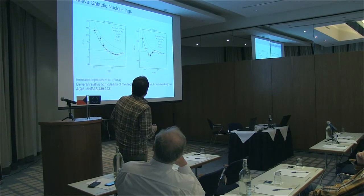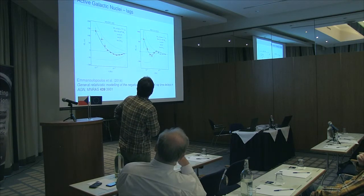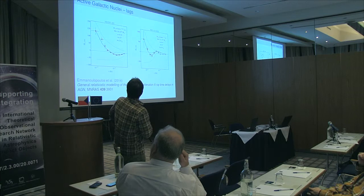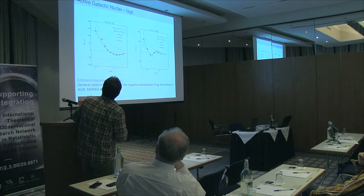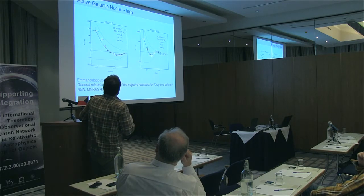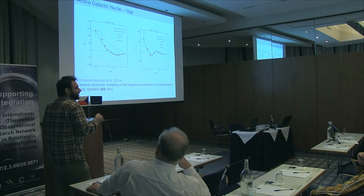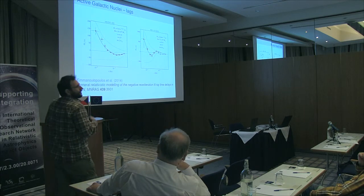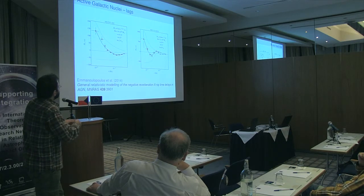We are studying time delays in signals in different energy bands that correspond to different components in the center of AGN, the radio quiet end of AGN. In this figure there is an observational result where you have a time lag corresponding to lags between propagating fluctuations on longer time scales, fluctuations coming down from the accretion disk to the corona, whereas at higher frequencies the opposite negative time delay can be explained by reflection from the disk.